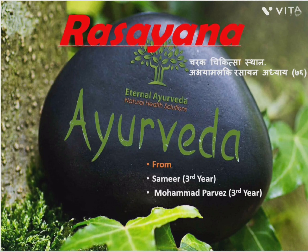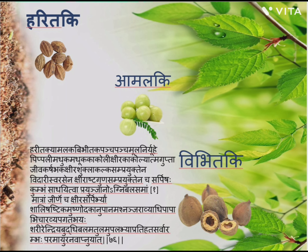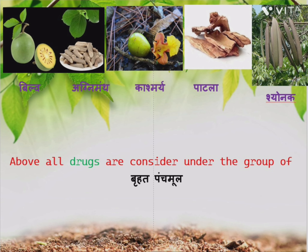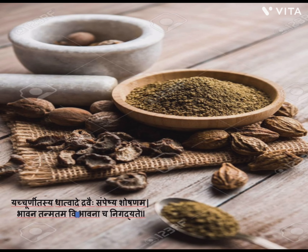Churna is well explained by the Acharya Charaka in the first chapter, 7th Shloka. Haritaki, Amlikhi, Vipitaki, and Bratpancha Moola are the main ingredients.